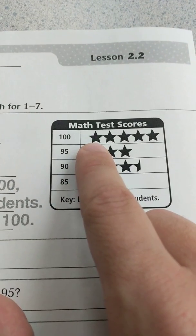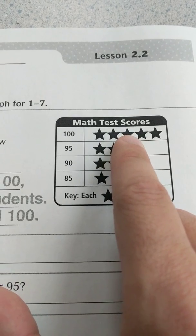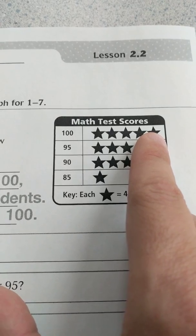So if we have one star here, that's 4, plus 4 is 8, plus 4 more would be 12, plus 4 more would be 16, plus 4 more would be 20.